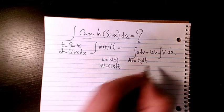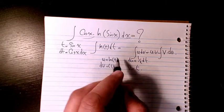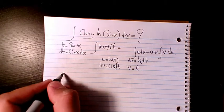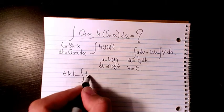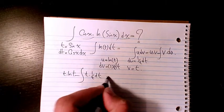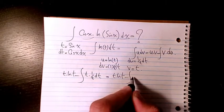So I will have u times v, which is t ln t, minus integration of v du, so it is t times 1 over t dt. So it's going to be t ln t minus integration of 1 dt because these two cancel out.